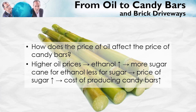Higher oil prices increase the demand for substitutes, such as ethanol. In the United States, ethanol is mostly made from corn, but in most of the rest of the world, including Brazil, it's made from sugarcane. Higher oil prices mean that more of the sugarcane crop is going to be diverted into producing ethanol, and less of it is going to be used to produce sugar — meaning a reduced supply of sugar, an increase in the price of sugar, and that increases the cost of producing candy bars. Who would have thought that one way of adjusting to a higher price of oil is to eat fewer candy bars?